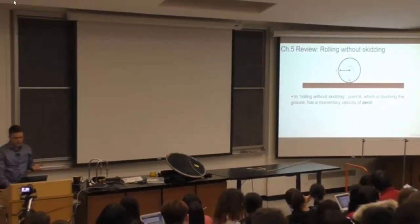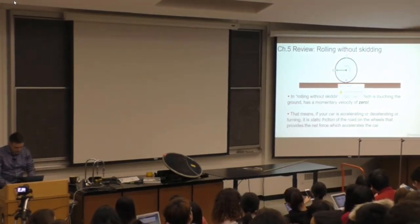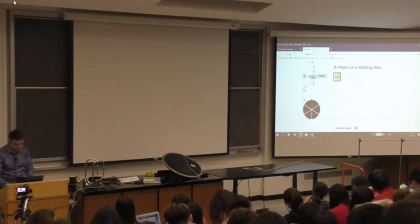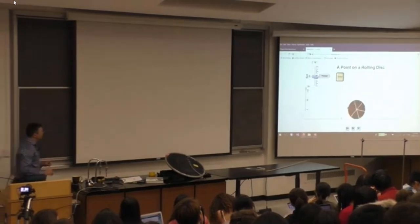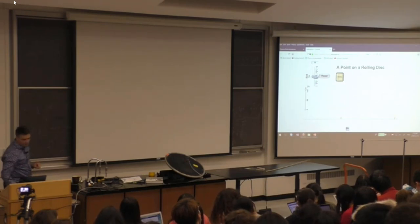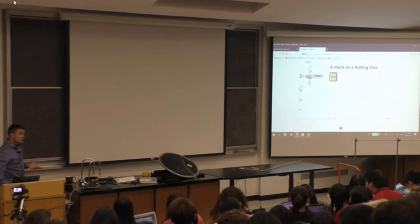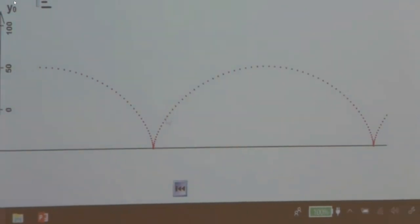In rolling without skidding, point A touching the ground has a momentary velocity of zero — that's where the static friction comes from. There's a little animation of a point rolling on a disk, a motion diagram laying down one dot every equal duration of time. If the dots are far apart, it's going faster; as they get closer together, the point is slowing down. It slows down until for a moment it is at rest when it hits the ground, then gets picked up again and dragged along. That's rolling without skidding.